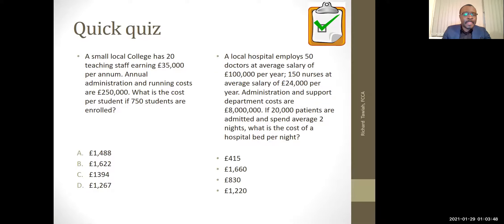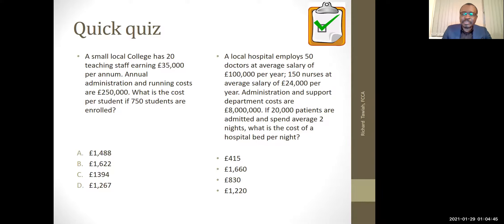Here's a quick analysis for you to work through. A small local college has 20 teaching staff earning £35,000 annually, annual admin and running costs of £250,000. What is the cost per student if 750 students are enrolled? The answer will be between C and D. Also: a local hospital employs 50 doctors at average salary of £100,000 per year, 150 nurses at average £24,000 per year, and admin and support costs of £8 million. If 20 patients are admitted and each spends two nights, what is the average cost of a hospital bed per night? The answer is roughly between £415 and £830 — work it out.